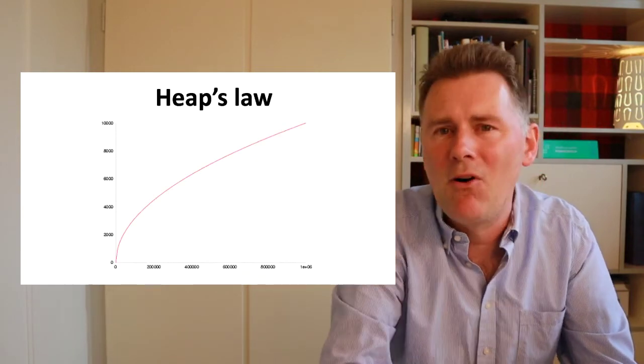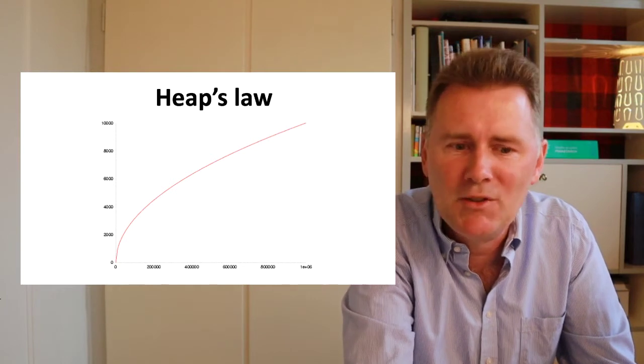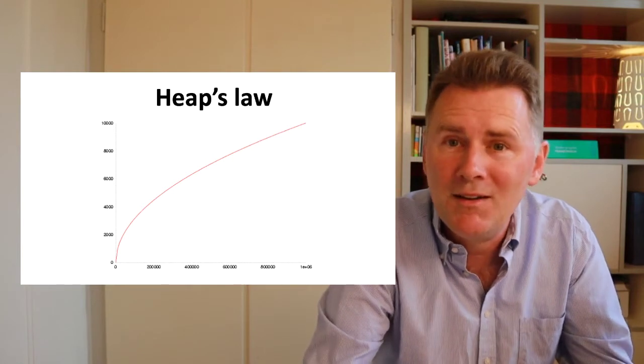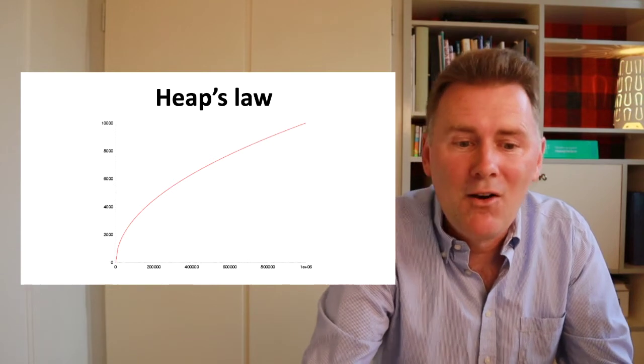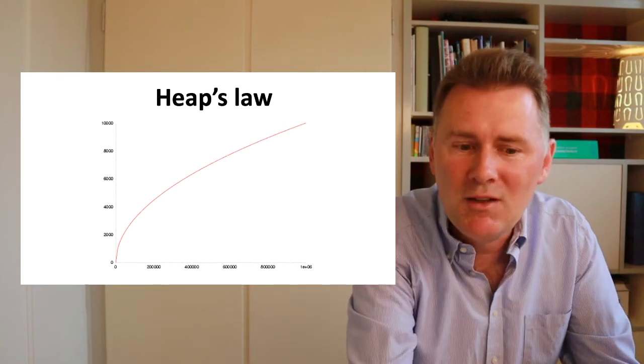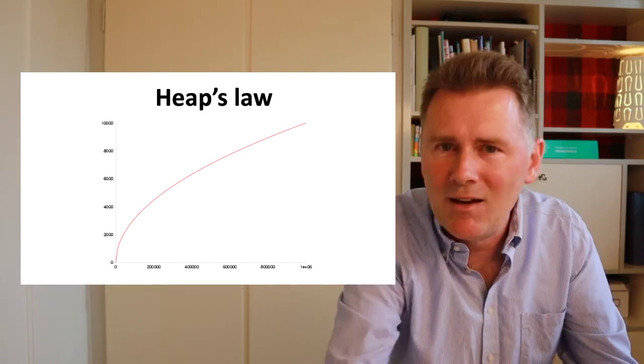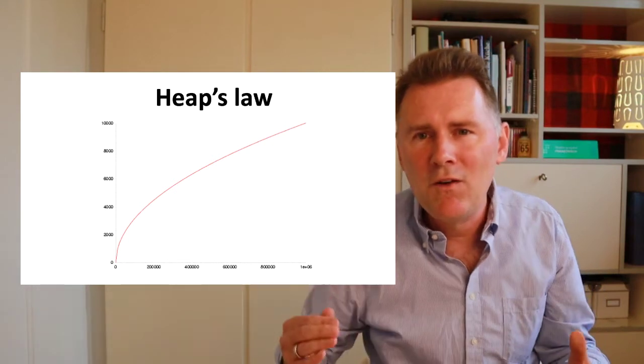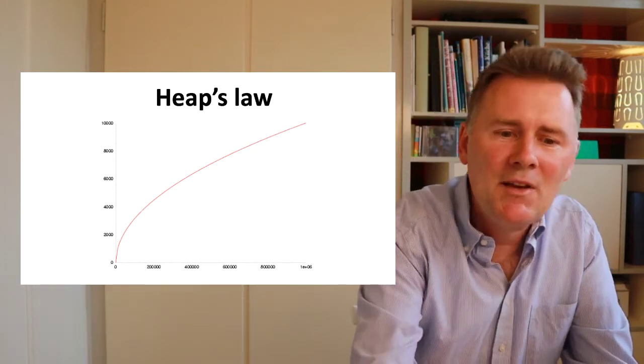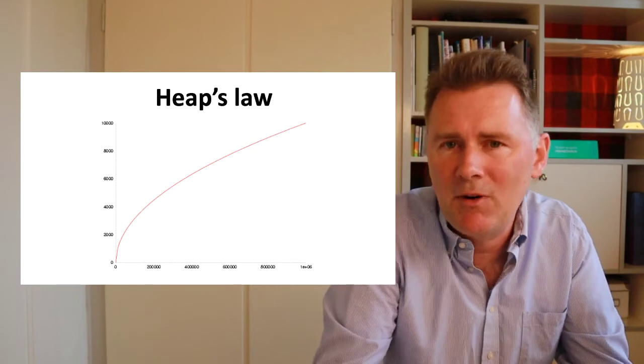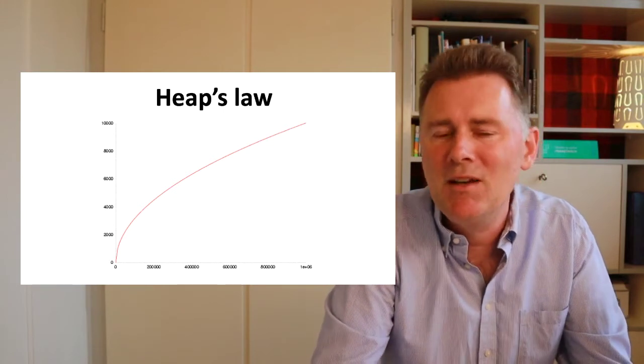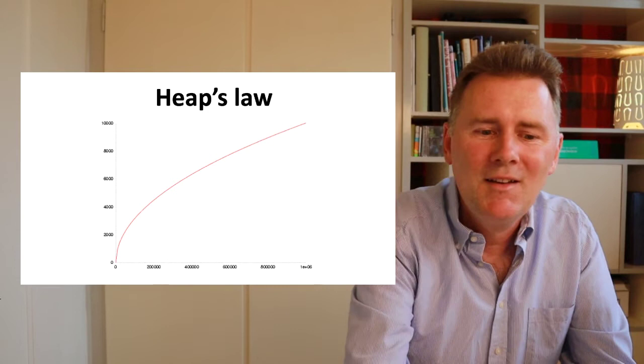Another example would be Heap's law, which describes the mathematical relation between the length of a text and the number of different words that you find in that text. Linguists call this the type frequency of a text. So the longer a text, the more different words you find, but crucially, the relation is not a straight line. As the text gets longer and longer, you find fewer and fewer new types because you've already found so many words. Linguists have found generalizations that can be expressed mathematically. So this we can count as the second similarity between linguistics and the natural sciences.